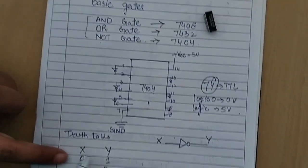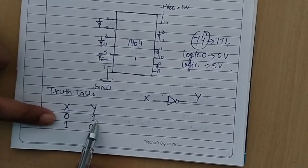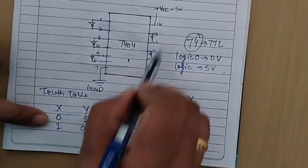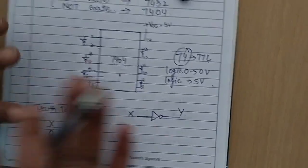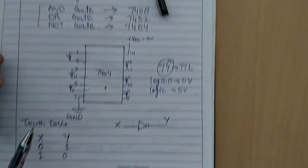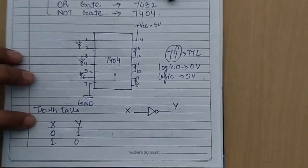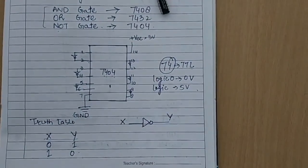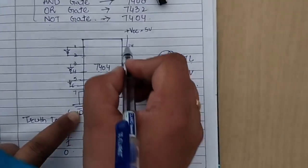Now we will verify the truth table. As you know, the truth table for NOT gate is: if input is 0, output will be 1; if input is 1, output will be 0. Among these 6 NOT gates, we can use any one and verify the truth table. One more thing to remember: in 14-pin ICs, pin number 7 is connected to ground and pin number 14 is connected to supply, that is plus 5 volts.